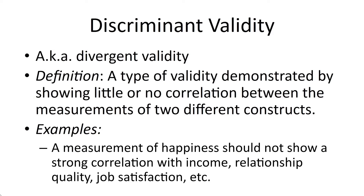The last form of validity is discriminant validity, also called divergent validity — pretty much the opposite of the last one. This is demonstrated by showing no correlation between measurements of different constructs. For example, a measurement of happiness should not show a strong correlation with income, relationship quality, or job satisfaction, because happiness is not the same as those things. We want a measure of happiness only — not anything else mixed in.